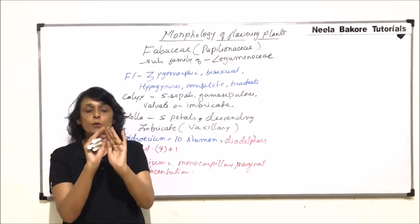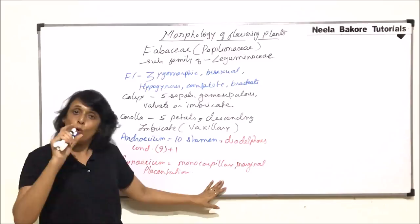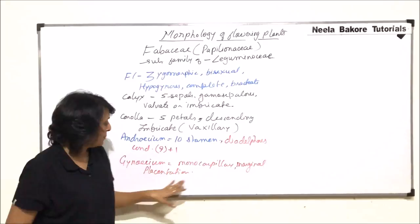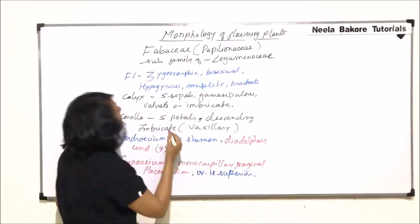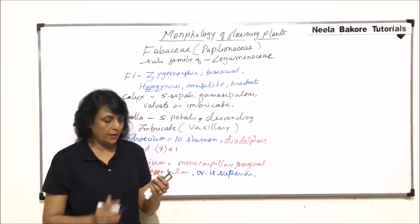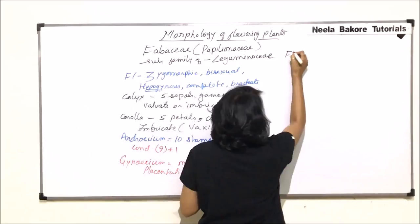Now when we open the pea pod we find all the seeds arranged on one side. That is only margin. That means placentation is marginal. And when we open it we see only one compartment. That means it is monocarpillary with only one locule or compartment. So we can say it is unilocular and the placentation is marginal. Ovary is superior. Here the flower was hypogynous, so the ovary has to be superior. Now using this information let us write down the floral formula.